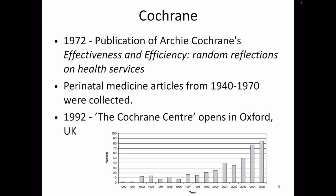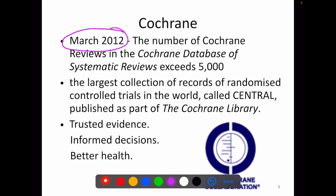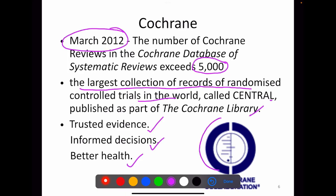This graph shows the number of reviews in the field of nephrology, and there is an increase in number of reviews over a period of time. In March 2012, the number of Cochrane reviews in the Cochrane Database reached more than 5,000. Cochrane Database is the largest collection of records of randomized controlled trials in the world, called the Central, which is published as part of the Cochrane Library, with the motto of providing trusted evidence, informed decisions and better health. The Cochrane Collaboration logo shows two C shapes — one for Cochrane and its mirror image for collaboration — with a forest plot of a meta-analysis present within the two C's.